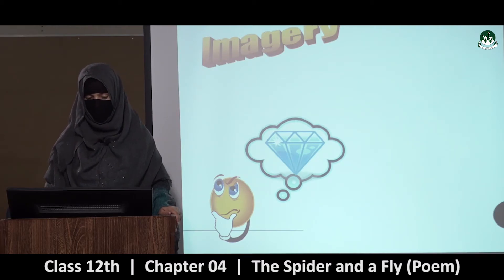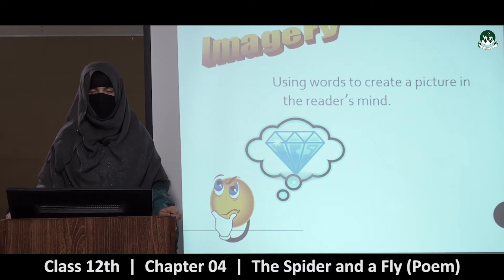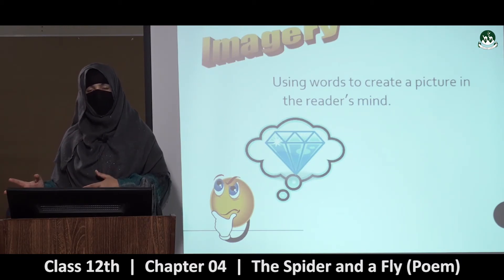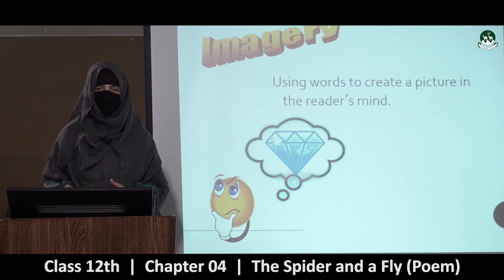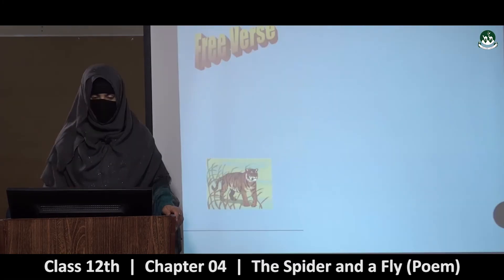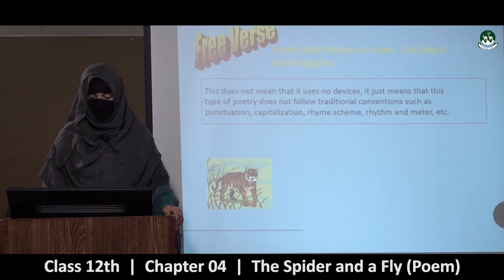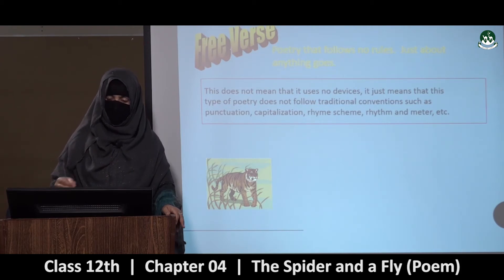So imagery — images jaise ke mujhe bata hai, that is related to imagery. Imagery mein using words to create a picture in the reader's mind — jaise words use karna jismein aapke saamne koi picture ban jaye. Jaise ki spider jo hai woh apne parlour ki ek picture banata hai words ke zariye — curtains, room ki curtains hai, bed hai, thin sheets hai. So this is called imagery. There is also a type of poetry jisko hum free verse kehte hai — poetry that follows no rule, just about anything goes.